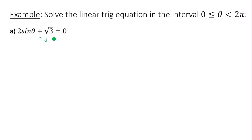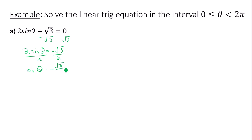The first thing I want to do is isolate the trig function. Subtract square root of 3 from both sides, then divide by 2 on both sides. I'm trying to find out: sine of what angle is negative square root of 3 over 2. What quadrants is sine negative? That would be quadrants 3 and 4, so since sine is negative, theta is in quadrant 3 and 4.